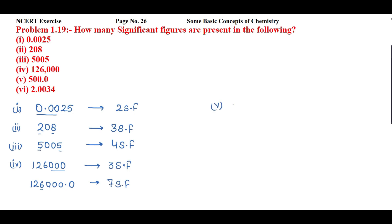The fifth one is 500.0. Look at this question — there is one zero present on the right side of the decimal, so this zero is significant in nature. This value is also significant. The zeros present in between the significant figures are always significant. So how many significant figures are there? 1, 2, 3, 4 — four significant figures.